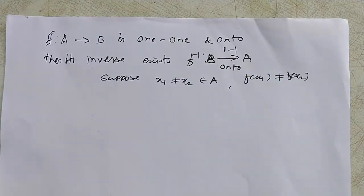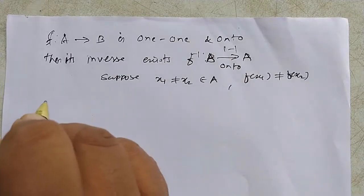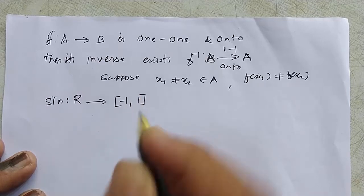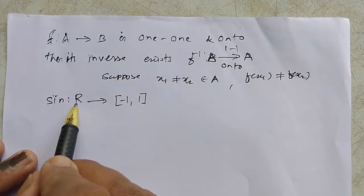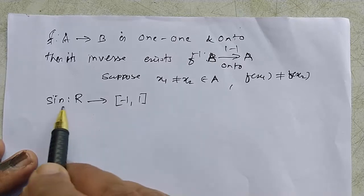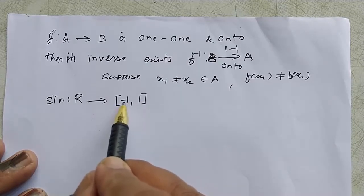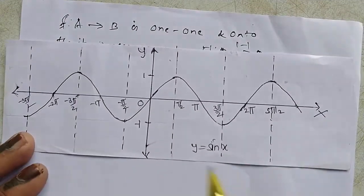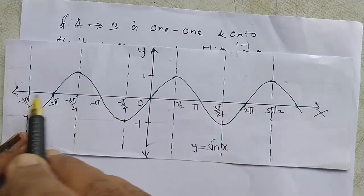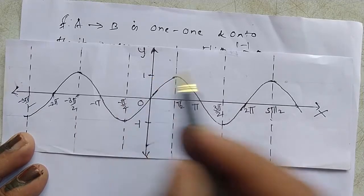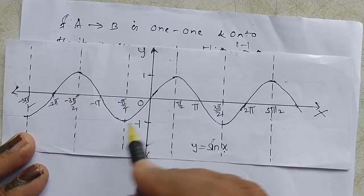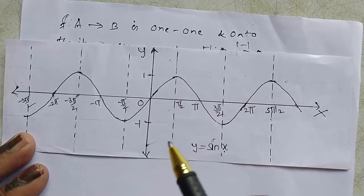Now we shall see whether the sine function is one-one and onto. The sine function is defined on the set of real numbers and its range is the closed interval [-1, 1]. The domain of the sine function is the set of real numbers and the range is [-1, 1]. If you observe the graph of the sine function, it is a wave-like curve. The domain is the x-values (all real numbers) and the range is the y-values, that is sin x, from -1 to 1.